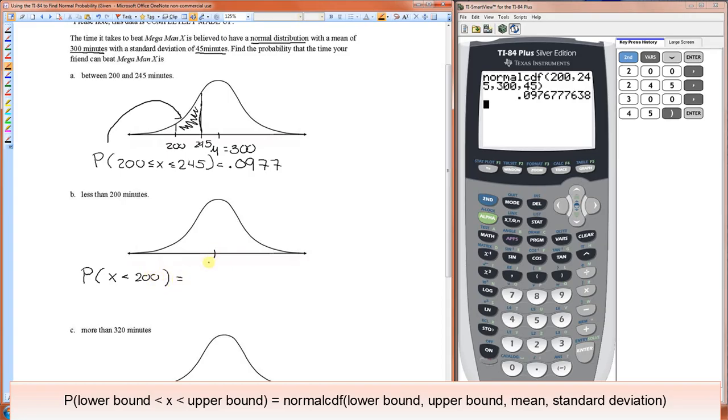Once again, the mean is right here in the middle. That's a 300. And 200 is around here somewhere. We're looking for this area, and that will represent that probability. Before we can do this, we need to know the lower bound and the upper bound. We know the upper bound is 200, and the lower bound is going to be negative infinity.